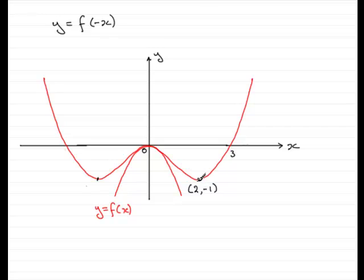And the minimum point, well that's going to be mirrored over to here so that coordinate is going to be minus 2 minus 1. And what about this point where it crosses the x-axis? Well this was at the point 3, 0. It's now at the point minus 3, 0. So I'll just mark in the minus 3 there.